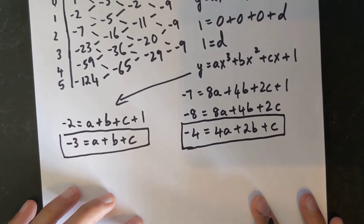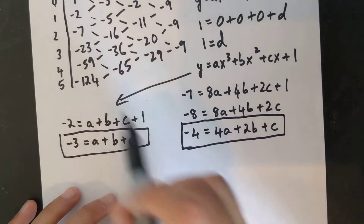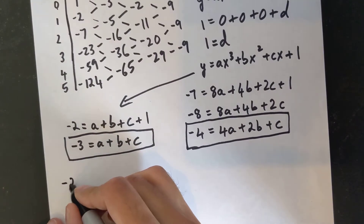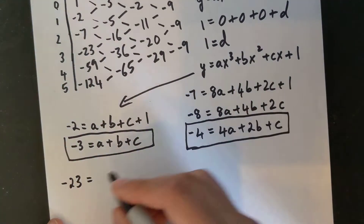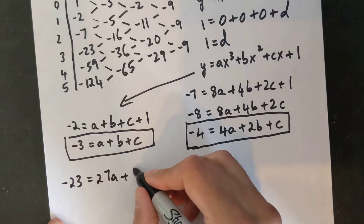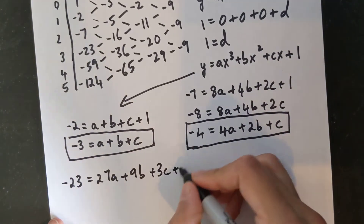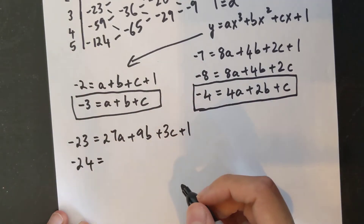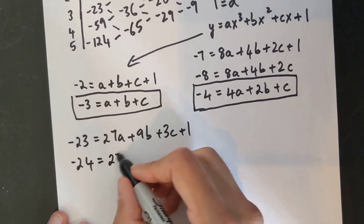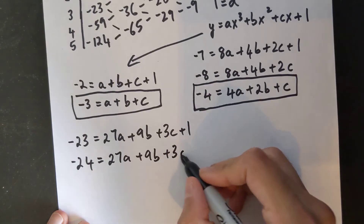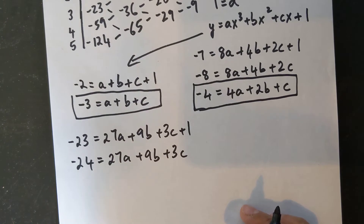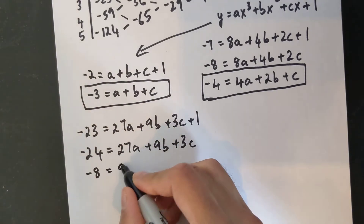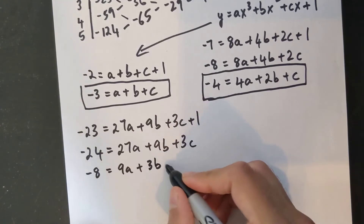Now I need the third equation. Using the fourth point: x = 3 and y = −23. Subbing in: −23 = 27a + 9b + 3c + 1. Moving the 1 over gives −24 = 27a + 9b + 3c. Dividing by 3: negative 8 equals 9a + 3b + c. That's my third equation.